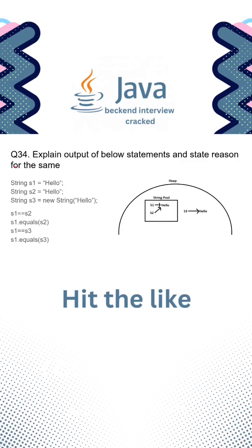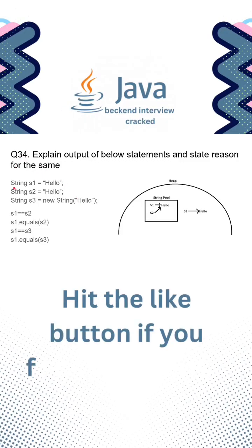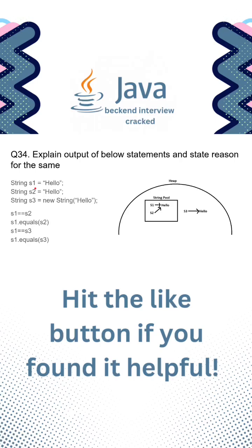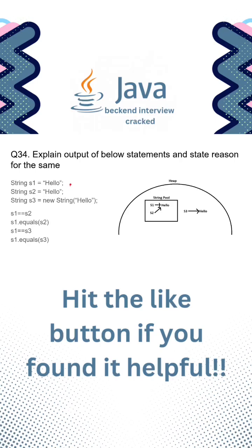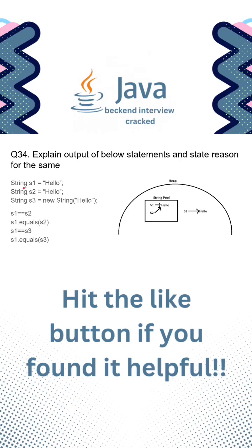One question that can be asked is if we are given three string declarations: two are declared using the literal way - String s1 equals hello, String s2 equals hello - and String s3 is declared using the object way by using the new keyword.